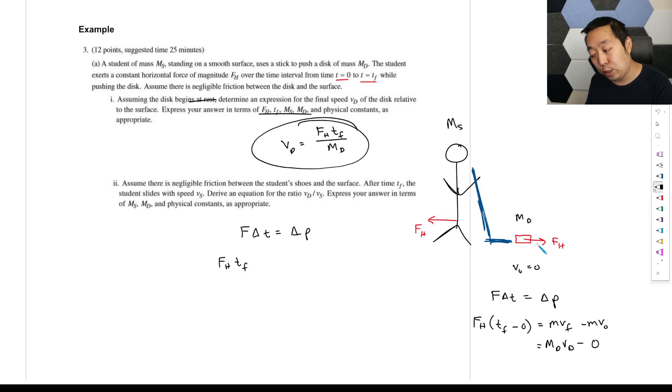Assume there's negligible friction between the student's shoes and the surface. After time TF, the student slides with speed VS. Derive an equation for the ratio of VD to VS. Well, let's think about the student. Well, so we're pushing on the puck with the FH. That means the student is experiencing a force FH equal and opposite by Newton's third law, right? So we're going to do the exact same thing for the student.